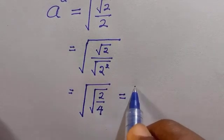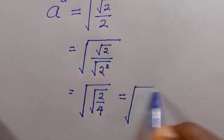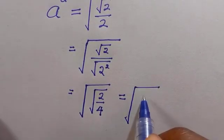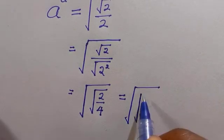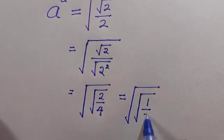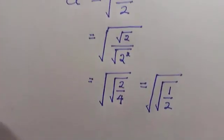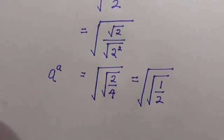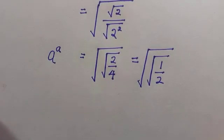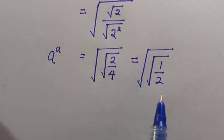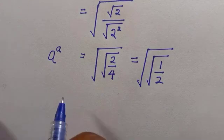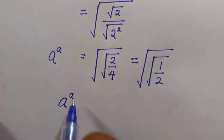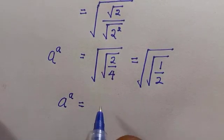So we have this equals the root of root 1 divided by 2, and we know that all this is equivalent to a raised to power of a. Our aim is we want to find a. We make sure that all this right hand side has the same base and the same power.